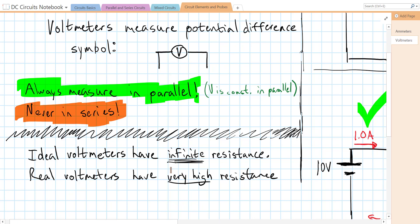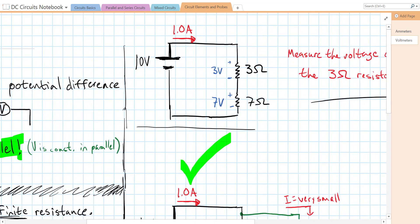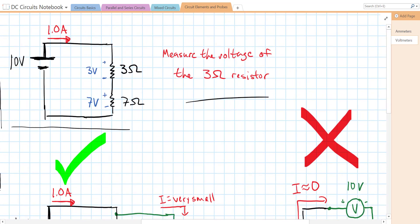So let's take a look at a real circuit and see how connecting the voltmeter in different ways affects it. Here we have a simple series circuit. There's a 10 volt EMF, and we have a 3 ohm and 7 ohm resistor in series with one another. That's 10 ohms total of resistance, so we can predict a total current of 1 amp.